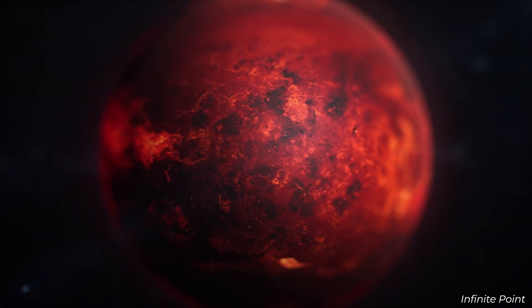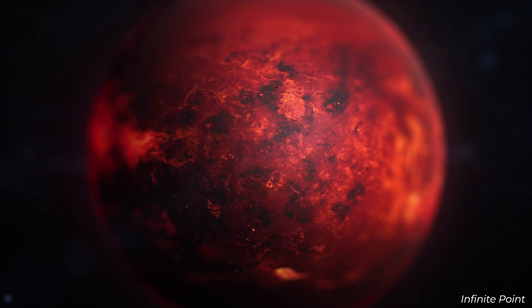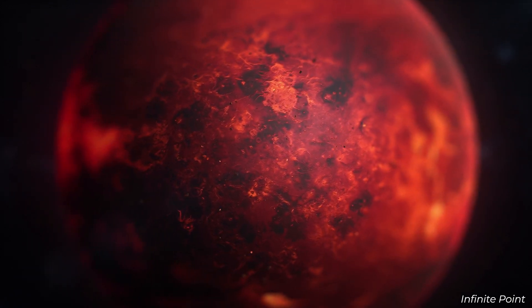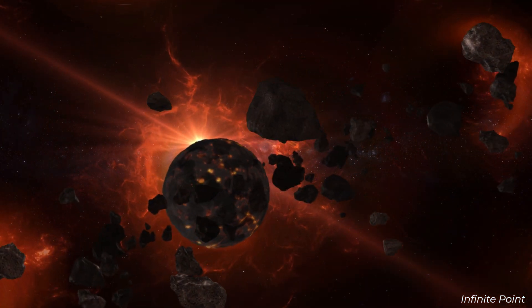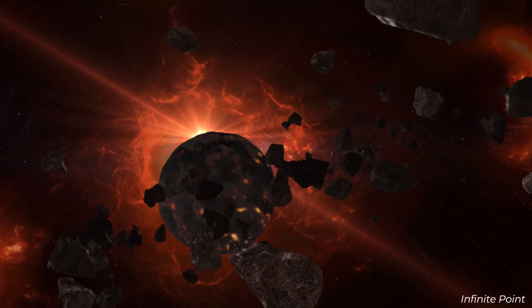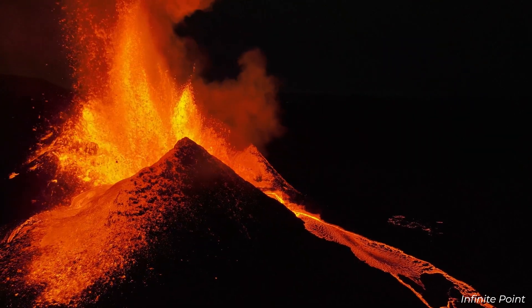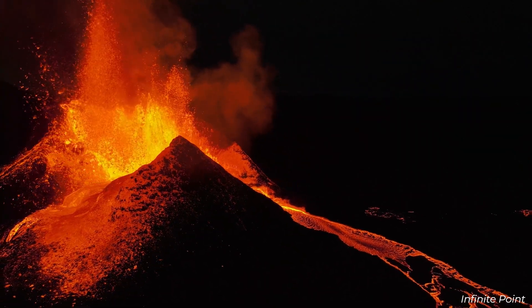Approximately 4.5 billion years ago, Earth was a hostile and chaotic place. The young planet was bombarded by meteorites. Its surface was dominated by molten lava.